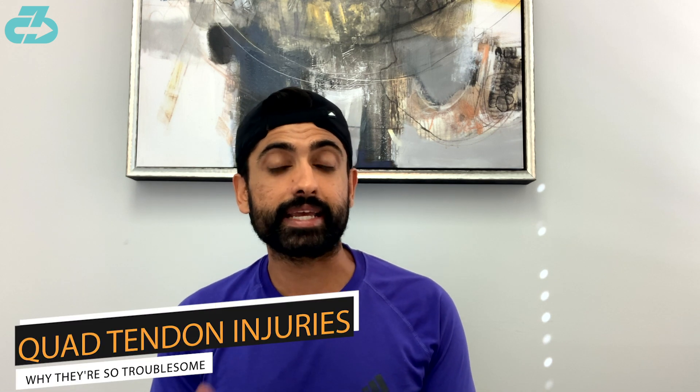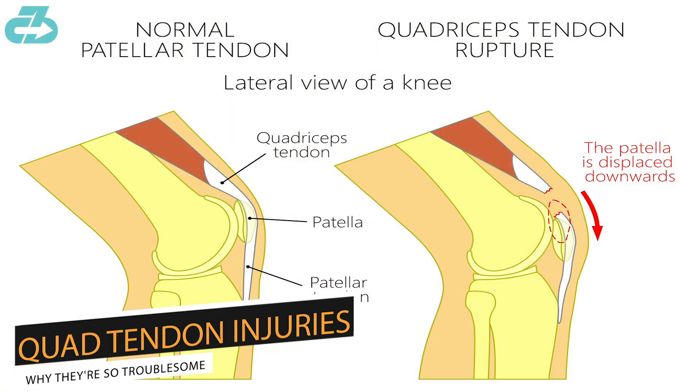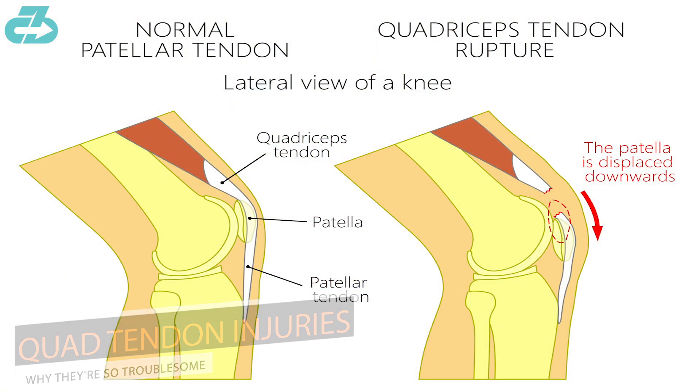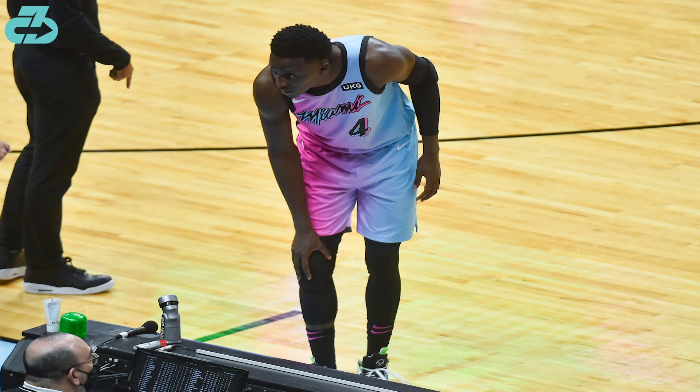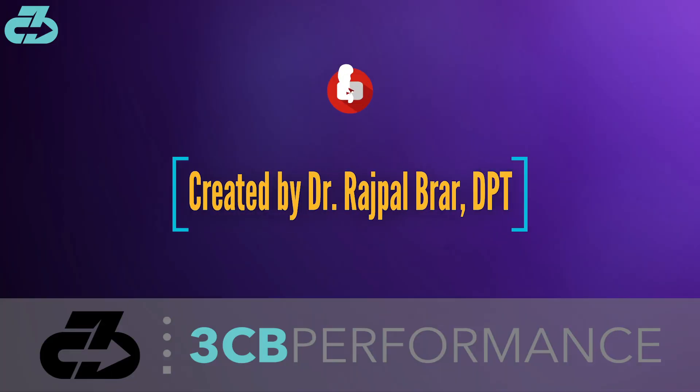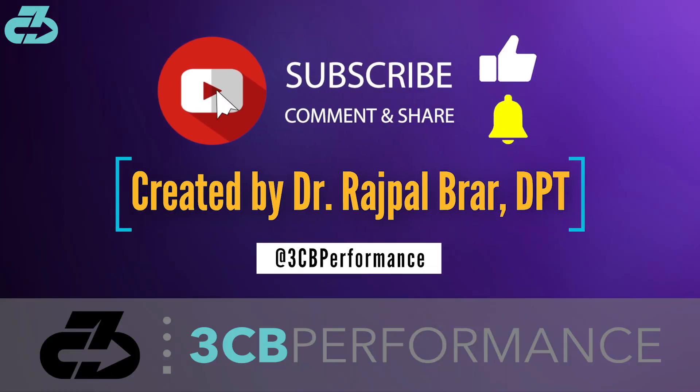It's due to that strength and elasticity that an injury to the quad tendon can be really troublesome. Most recently, the topic that comes to mind is Victor Oladipo's quad tendon rupture and his re-injury.